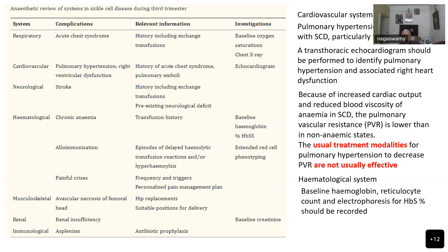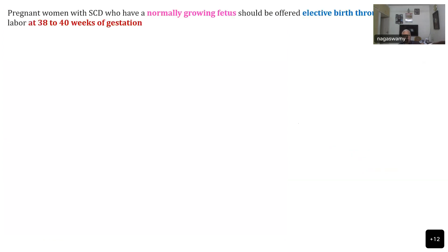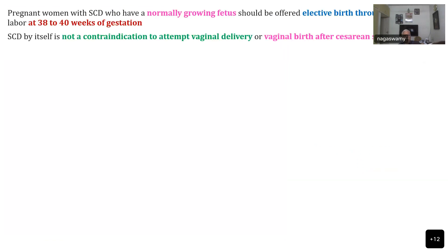For the hematological system, baseline hemoglobin should be done. An increased reticulocyte count indicates active bone marrow — sometimes aplastic crisis can occur in sickle cell where all cells produced by the bone marrow are reduced, so finding increased reticulocytes means the bone marrow is active. Hemoglobin electrophoresis for HbS variety should be done. Pregnant women with a normally growing fetus and no major sickle cell crisis in their history can be offered elective vaginal delivery after 38 to 40 weeks of gestation. Sickle cell disease is not a direct contraindication for vaginal birth after caesarean section.